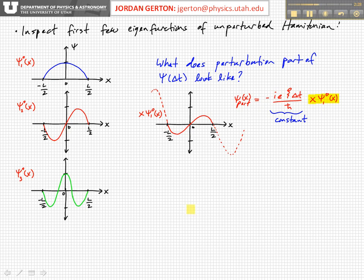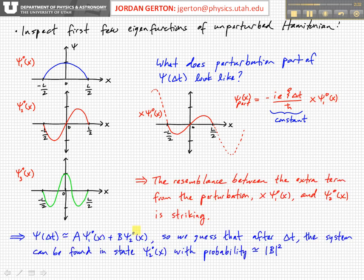Between minus L over 2 and L over 2, we get something that looks very much like the first excited state of the unperturbed Hamiltonian, psi 2. So x times psi 1 looks very much like psi 2. What we've plotted is again x psi 1, that's the part of the relevant part of the perturbed Hamiltonian, of the perturbed part of the wave function. So we notice that the resemblance between this and this here is quite striking.